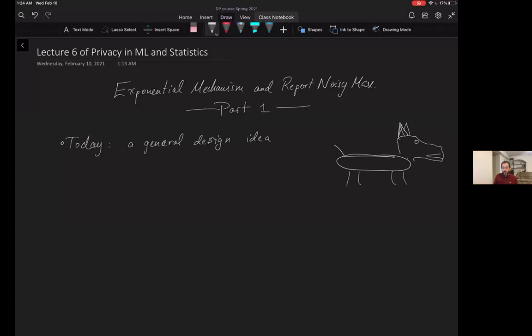Hi, this is lecture six of the course Privacy and Machine Learning Statistics. Today's lecture is going to cover the exponential mechanism and a related mechanism called the report noisy max mechanism. This is part one.